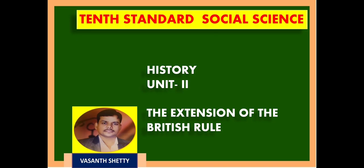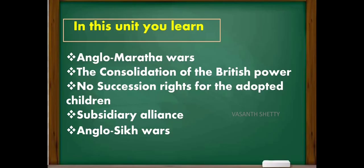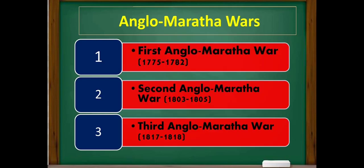Welcome to History Unit Number Two: The Extension of British Rule. In this lesson we are going to discuss concepts like Anglo-Maratha Wars, the consolidation of British power, no succession rights for adopted children, subsidiary alliance, and Anglo-Sikh Wars. The first important concept is Anglo-Maratha Wars — there are three Anglo-Maratha Wars in this lesson.